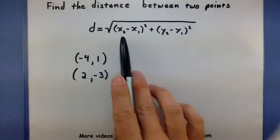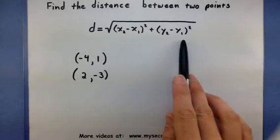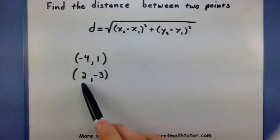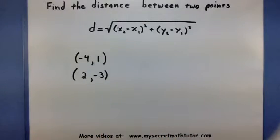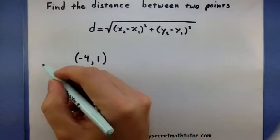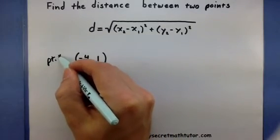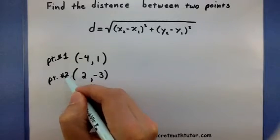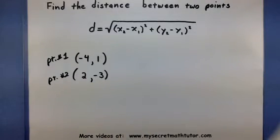Where this x2 and x1 and the y2 and y1 come from is they refer to the coordinates of the points. So before I even start off, I'm going to go ahead and label my points as point number one and point number two. This will help me keep them straight in the formula.